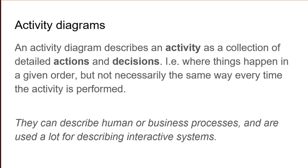Games are interactive systems with very fixed rules and processes — even board, card, and dice games, where all the players agree on the process. It could just as well be described as an activity diagram as text descriptions in a book. And computer games are basically just another way of describing a process. So creating a detailed activity diagram prepares you for when you are going to program the computer to follow the same process — that is, play the game.